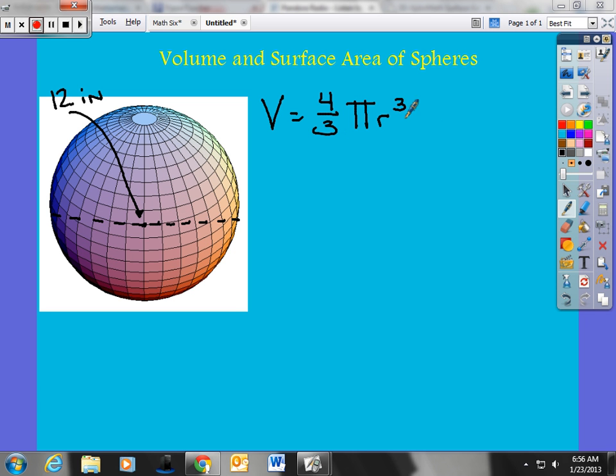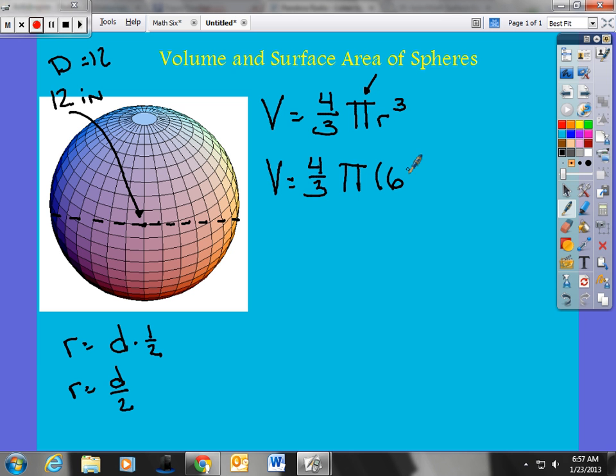So all I'm going to do is I'm going to plug and play this value into this formula. So I'm going to go volume equals, I'm going to answer this in terms of pi. Leaving the pi, so we're not going to multiply pi by 3 and 1400. So we have 4 thirds times pi. Now we're going to take that radius. Well the diameter equals 12. Radius is equal to diameter times 1 half or diameter divided by 2. So 12 divided by 2 gives me 6. So I have 6 cubed.